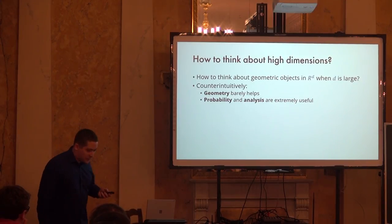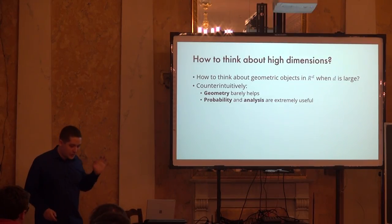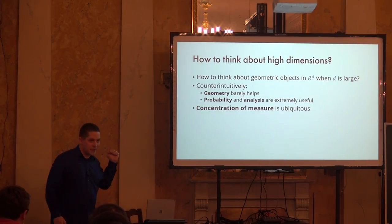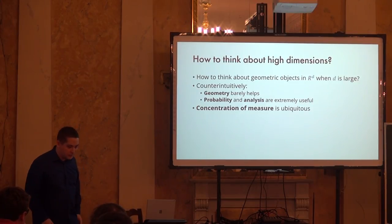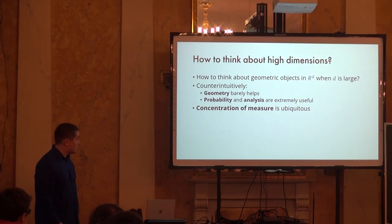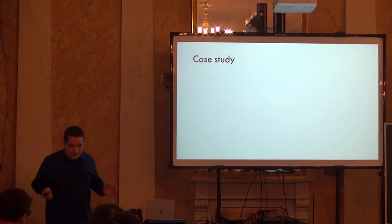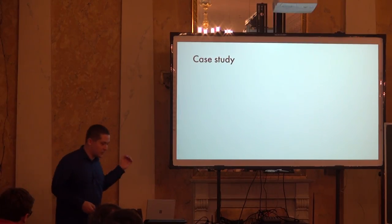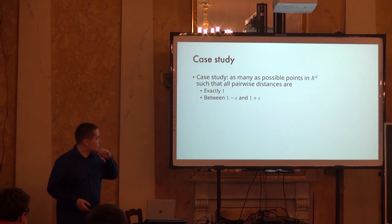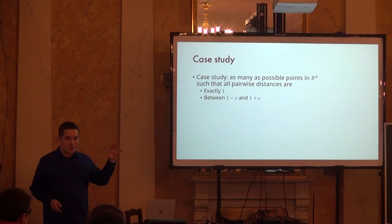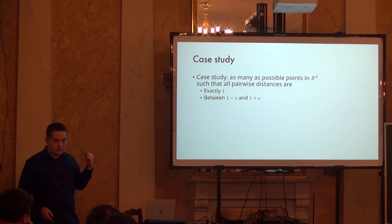The phenomenon that occurs very often — and will be instrumental in what I cover — is called concentration of measure. Let me illustrate it with one concrete problem that might feel like a puzzle but has significant connection to what comes next. Take the D-dimensional space R^d. The question is: how many points can you place in R^d so that all pairwise distances are exactly one? And a second version: all pairwise distances are between 1 minus epsilon and 1 plus epsilon, where epsilon is like 1/100.